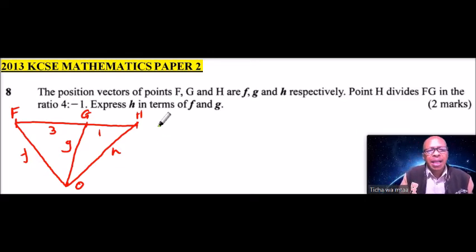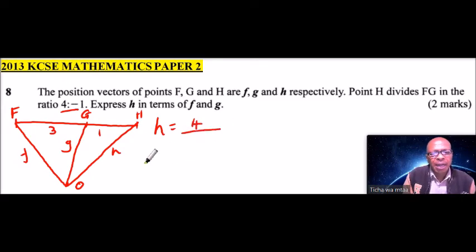So from there we will say, then the vector h is equal to, now here we use this ratio here because we are comparing or we are talking of how H divides F, G. So we say, from here to here it is 4, that is 3 plus 1, it is 4, you divide by, now we add 4 plus minus 1.